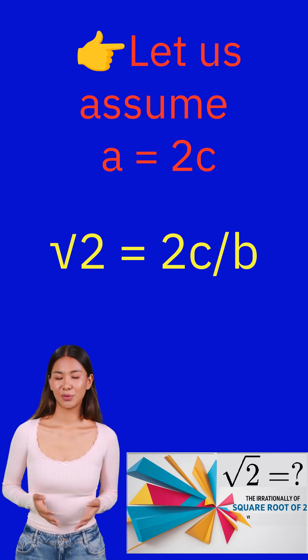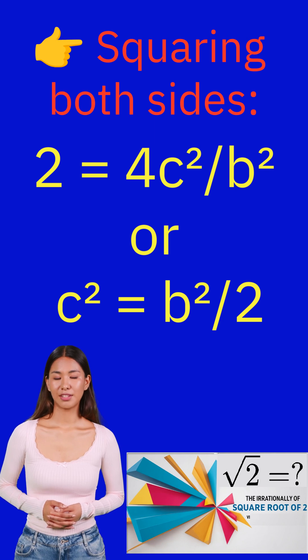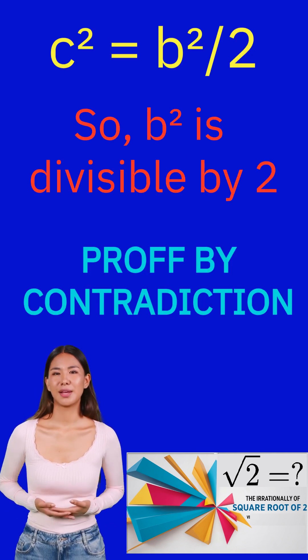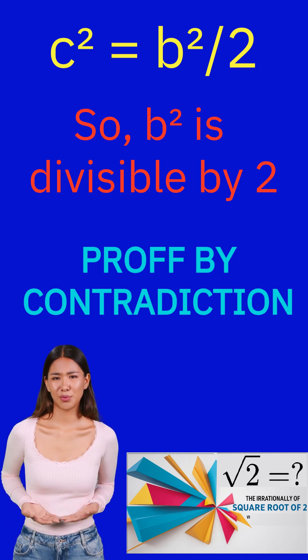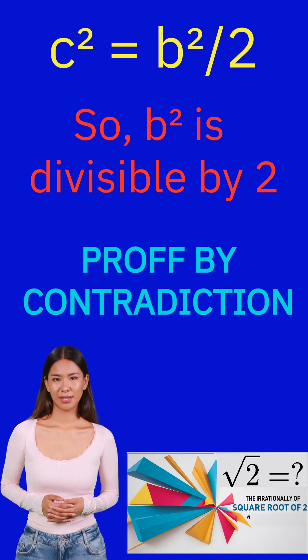Let us assume a = 2c, where c is an integer. On squaring both sides, we get c² = b²/2. We can see that b² is divisible by 2, so by proof by contradiction theorem, b is also divisible by 2.